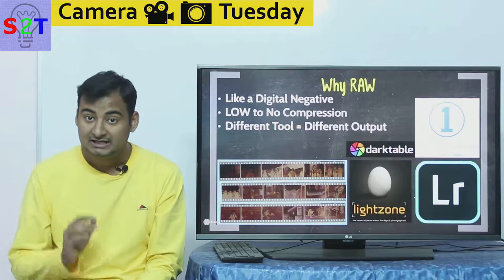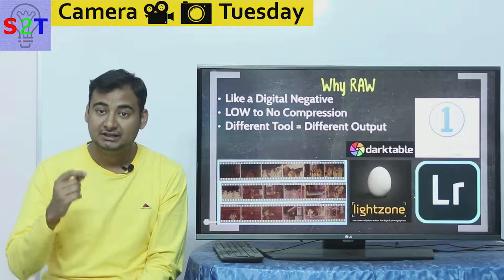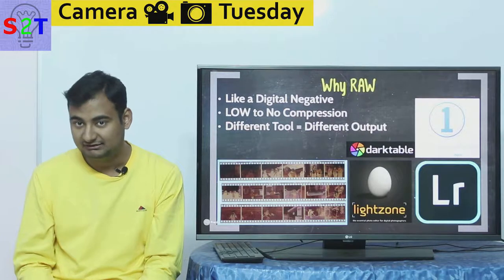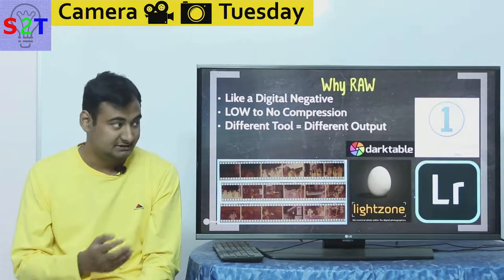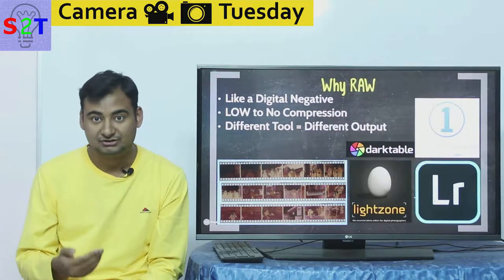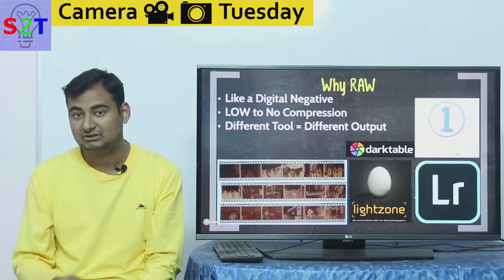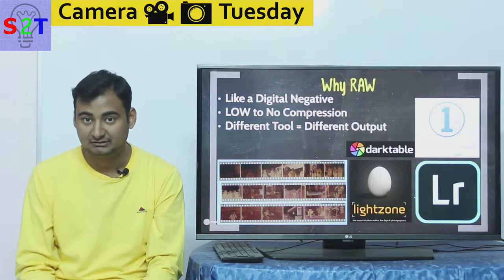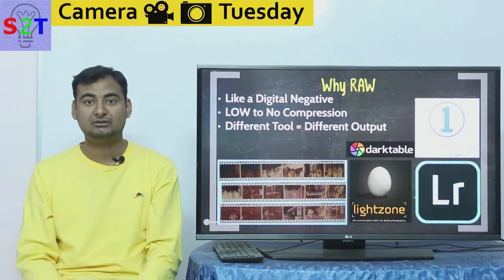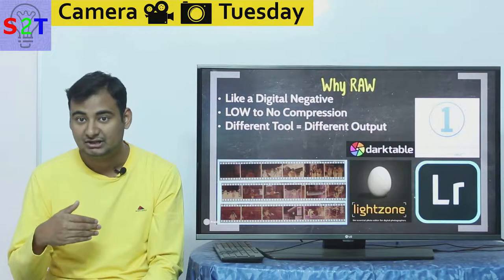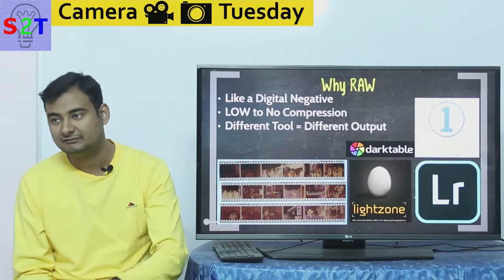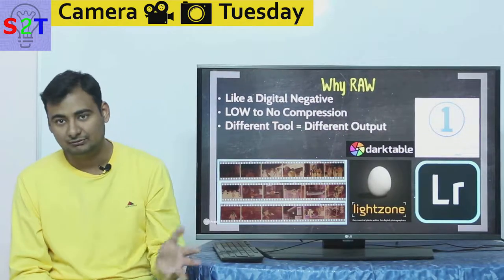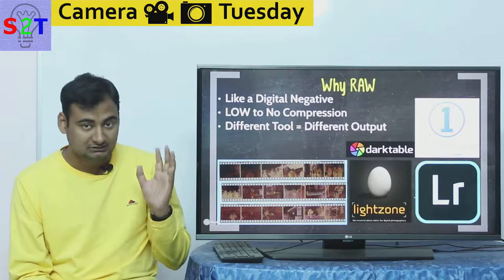Adobe created what they call DNG — Digital Negative — as a universal RAW format. It works quite well, and right now in Lightroom there's a button to simply convert your files to DNG. DNG has some advantages: RAW is camera-specific, so if you buy a new Canon model, your current Lightroom version may not support it. This happened when I bought a Canon 800D — my Lightroom, which worked with the Canon 700D, could not convert the new RAW. I had to wait months for a Lightroom update. DNG acts as a bridging system — some cameras like Leica even shoot directly to DNG.